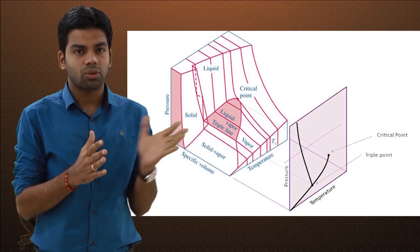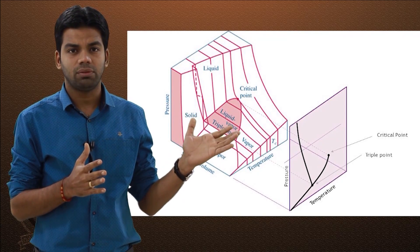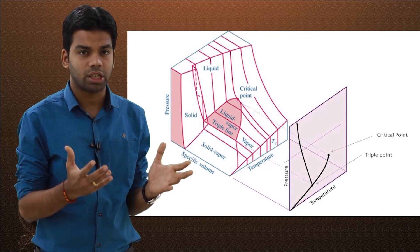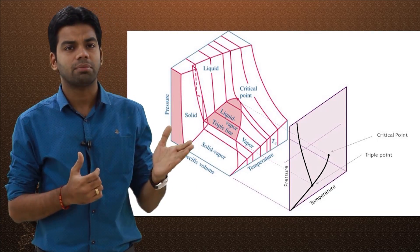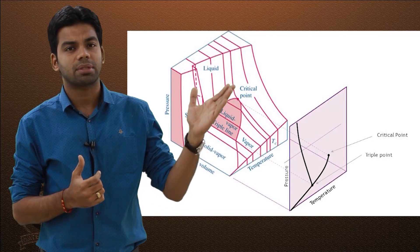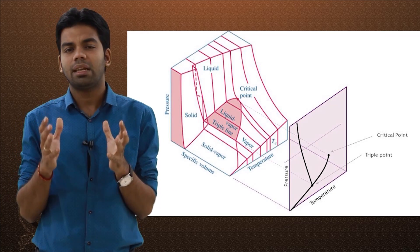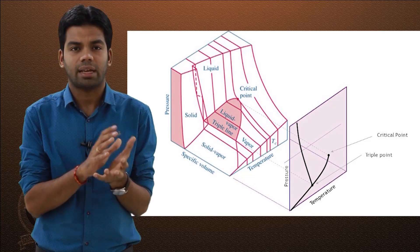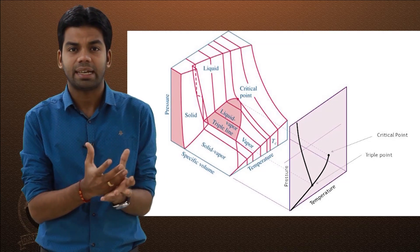Similarly, the saturation curve, which is a dome shape in the PV diagram, becomes a line when projected onto the PT diagram. This is how we obtain the PT diagram from the 3D PVT representation.